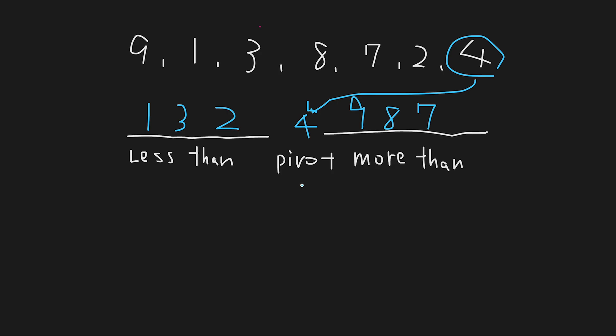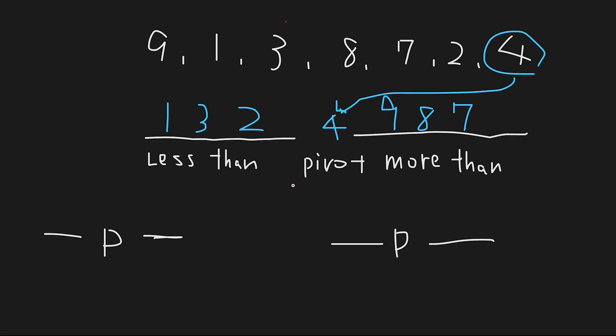That's the first process. In the second process, we apply the same algorithm again. In the first process, we created two parts where these numbers are less than 4 and these numbers are more than 4. In the second process, we apply the same algorithm to each part and sort them out.